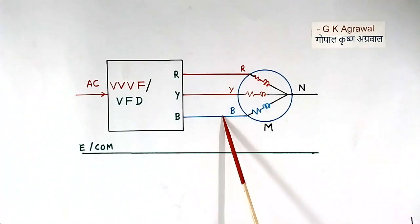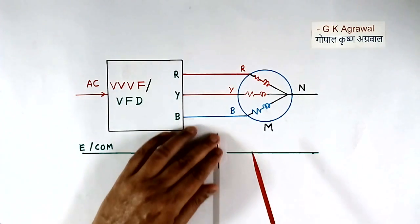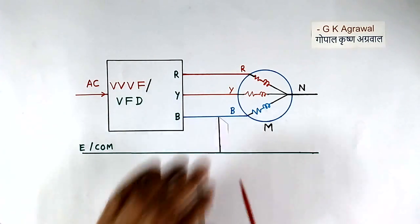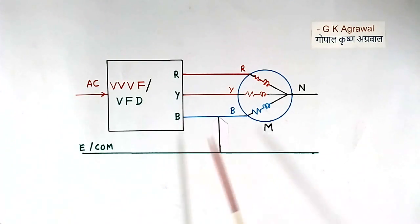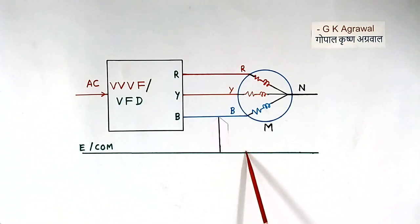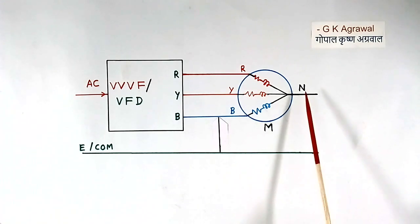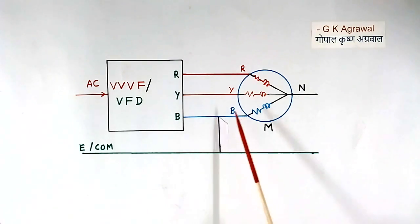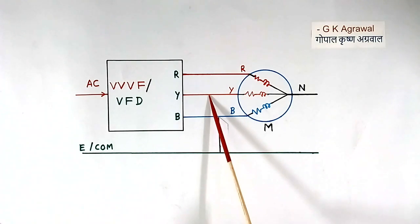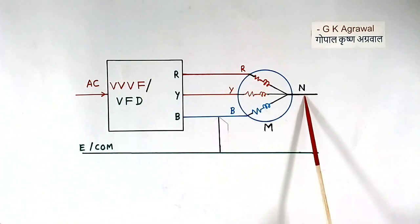Now suppose there is a line-to-ground fault here. This is the fault — V has become short with earth. So the voltage of this point will become 0 because earth is 0. When this voltage becomes 0, the neutral voltage will not be 0 anymore — it will be something else, and we can find out the location of the fault. Similarly, if the fault is at other points, this neutral voltage will also change accordingly.